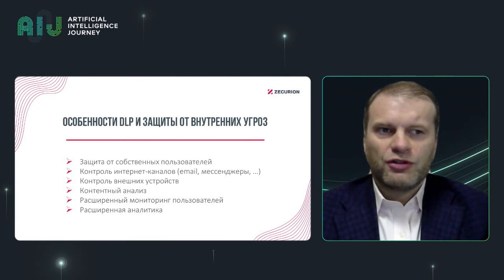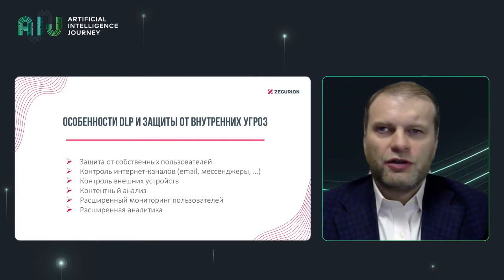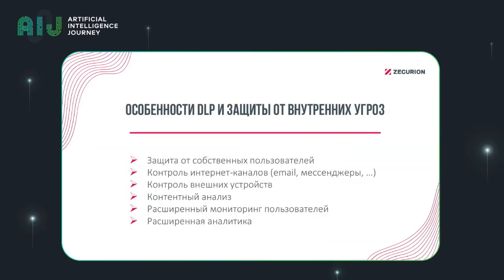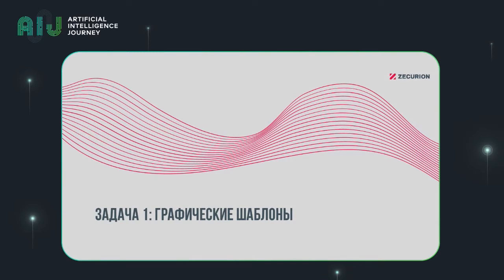DLP systems are aimed at our own users — not external hackers or actors, but users who know very well where the information is, which information has value, how well it is protected, and they often know a lot about our internal infrastructure. This creates extra complexity. To protect against leakages, you need to control both the Internet channels and external devices, and analyze the information being passed on them — to identify whether the information being sent is okay to transfer or not okay. For this, you also need AI.